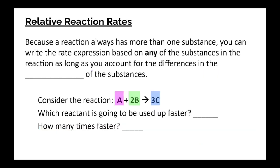So relative reaction rates are important, being able to compare different rates of different reactants and products to each other. Because a reaction always has at least two substances, and generally in AP chemistry more than one reactant and product, you can write the rate expression based on any of these substances as long as you account for the difference in the stoichiometry of these substances. So I once again have a very simple reaction here, where A and two Bs react to make three Cs. And I want you to look at this stoichiometry and think about which of our reactants, A or B, is going to be used up faster, at a greater rate.